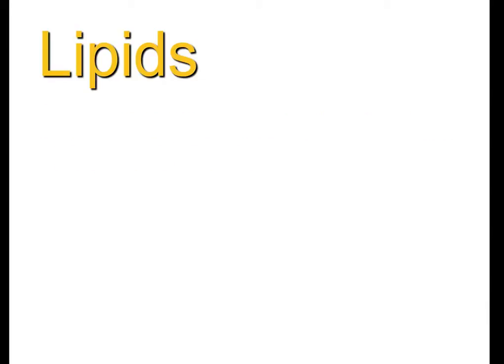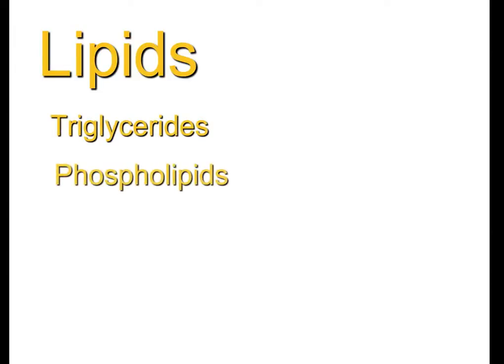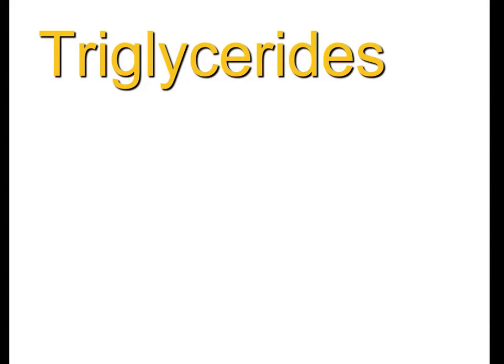Right now we're mostly covering triglycerides. But besides triglycerides, we'll also talk a little bit about the phospholipids, which are important in cell membranes, the steroids, which would be things like cholesterol and certain hormones and certain vitamins, and last, the waxes. Let's start with probably the more significant one — triglycerides.